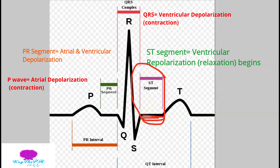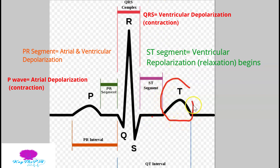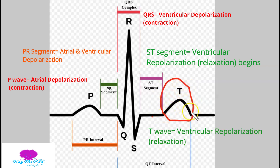Then we have our T wave. The T wave is the continuation of ventricular repolarization. Ventricular repolarization starts at the ST segment and ends at the T wave.